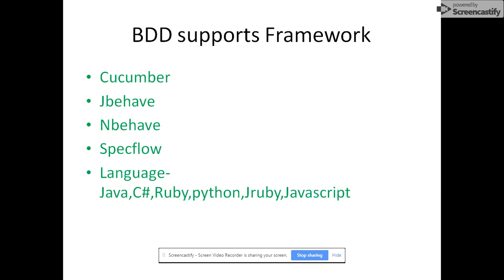BDD-supporting frameworks include Cucumber-JVM, JBehave, Behave, and SpecFlow. They support multiple languages including Java, C#, Ruby, Python, JRuby, and JavaScript. Initially Cucumber was implemented only for Ruby, then for Java (Cucumber-JVM), and then made generic for any language. It is widely used with Selenium and LeanFT. Protractor has very good support for Angular.js, while for React.js, WebdriverIO with Cucumber is a great tool for JavaScript testing.